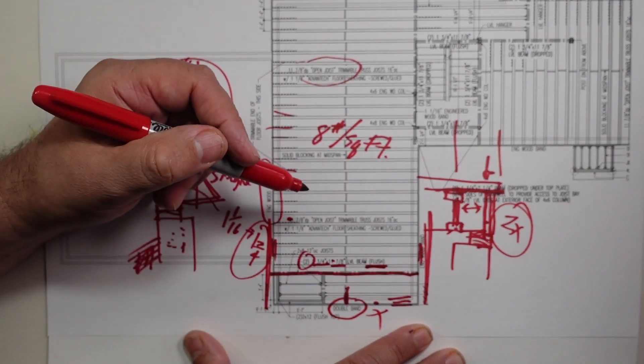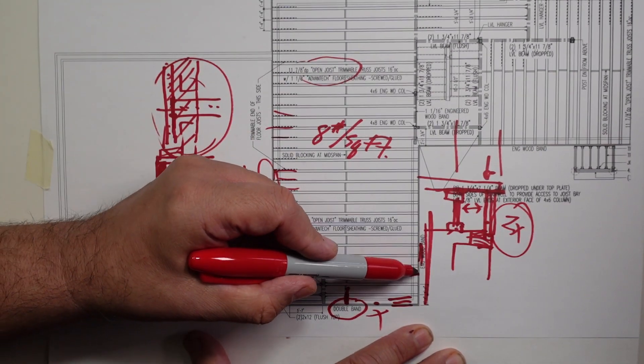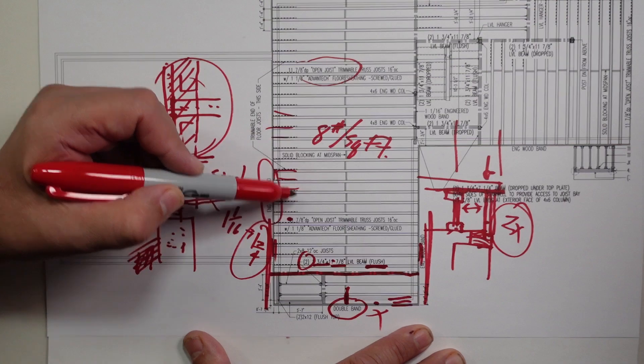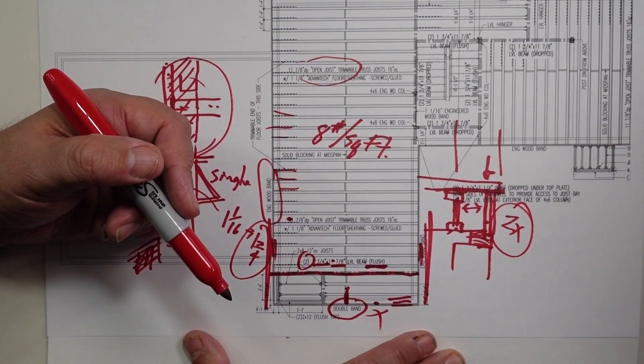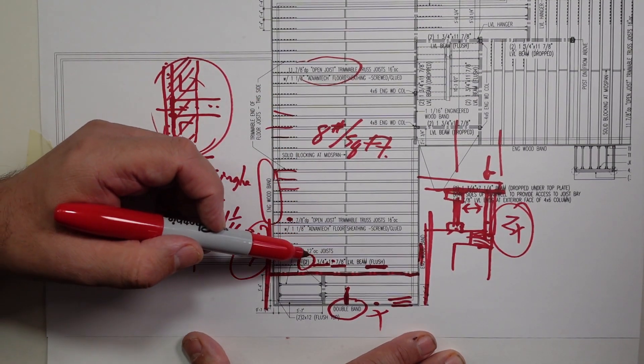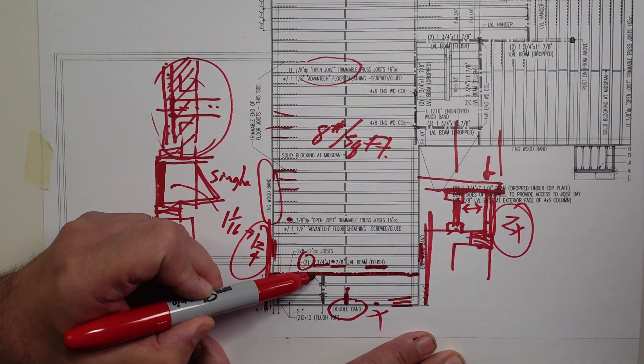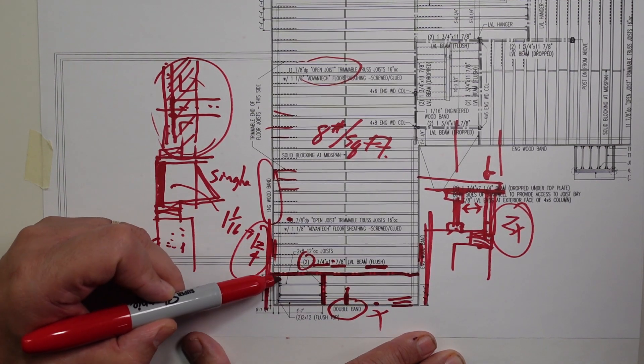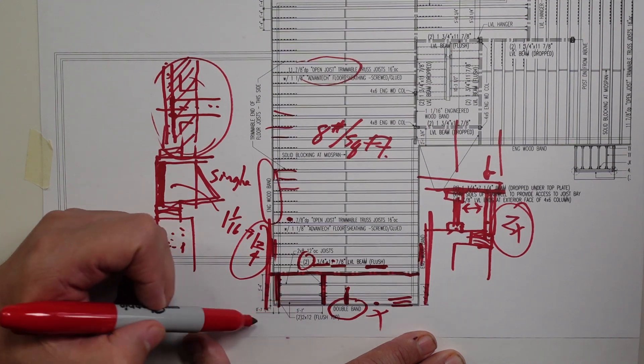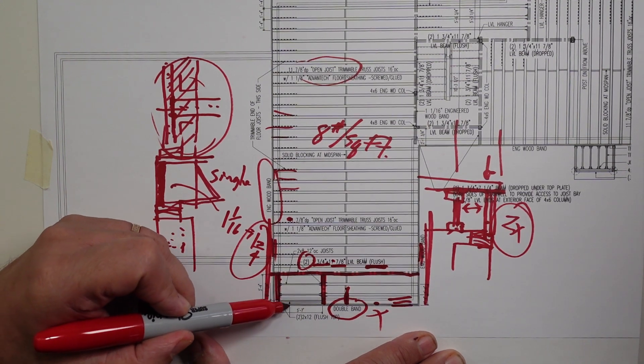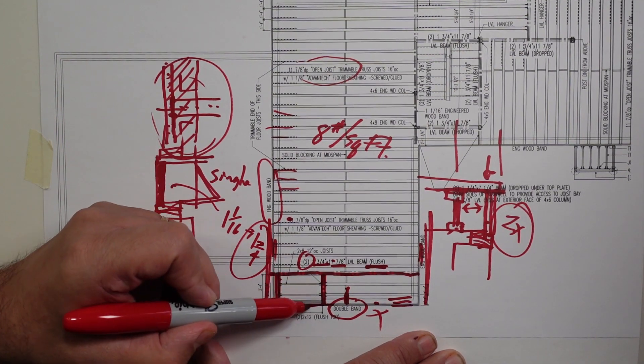So remember from, again, last week's video, the flush condition means that LVL is in the same space as that floor plane. And then we have the same two by's here, two two by twelves, and those run into that double band joist.